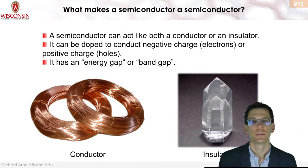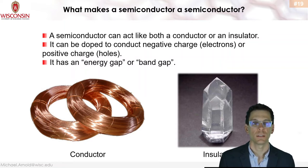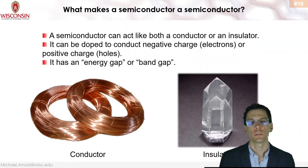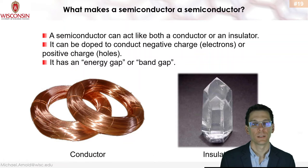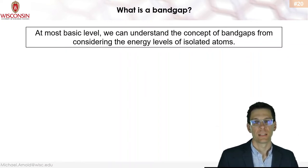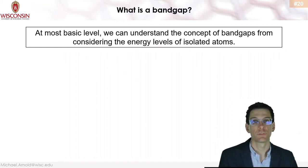A semiconductor can dynamically switch between acting like a conductor and an insulator. It can be doped to conduct negative charge or positive charge — the latter through what's called holes. An important parameter is the band gap, or energy gap. Materials like copper are conducting and quartz is insulating; a semiconductor can switch between these states on ultra-fast timescales. To understand the band gap, we start with the energy levels of electrons in isolated atoms.